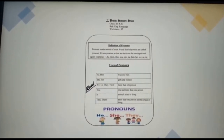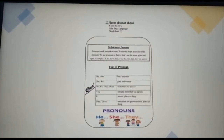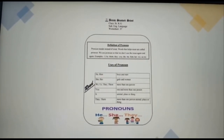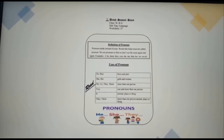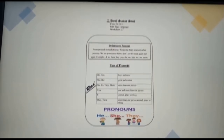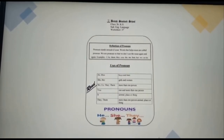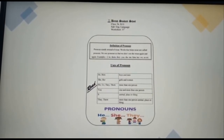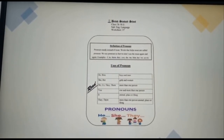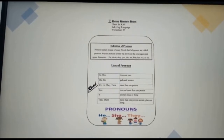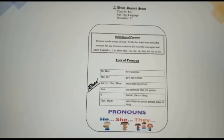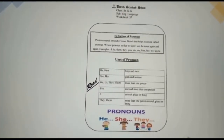A pronoun stands instead of a noun. Words that help nouns are called pronouns. We use pronouns so that we don't use the noun again and again. Examples: I, he, them, they, you, she, me, him, her, we, us, etc.